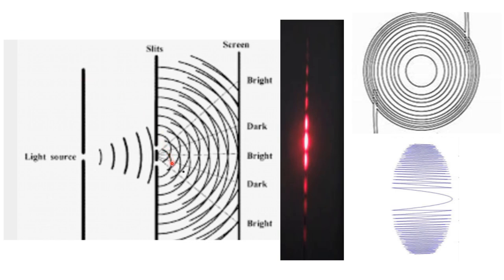In Young's double slit experiment, light passes through a single slit and spreads, then encounters two secondary slits. The waves passing through these two slits become two secondary waves that interact with each other, creating constructive interference and destructive interference. When light travels like waves, it has a high point called the crest and a low point called the trough, just like waves in the sea.